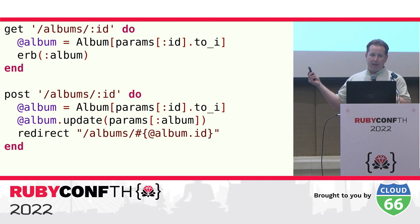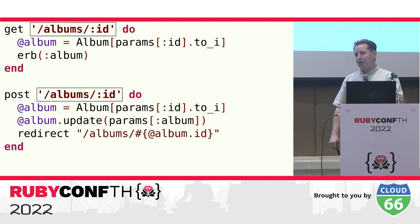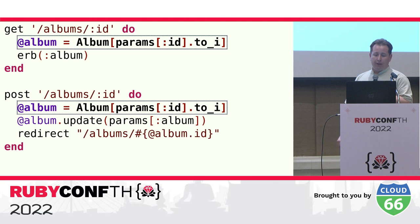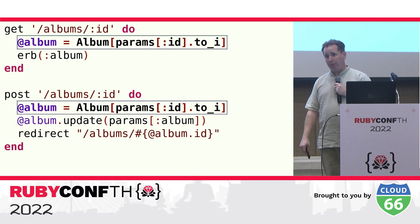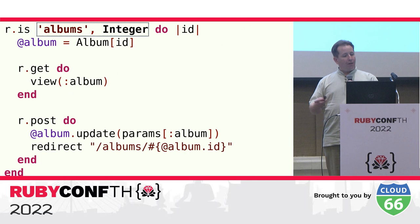Let me start with some example Sinatra code. Here we have two routes both related to a specific album — one for GET and one for POST. Sinatra's approach leads to duplication: you can see the path is duplicated in both routes, and the conversion of the parameter from a string to an integer and the retrieval of the album from the database is also duplicated. Using a routing tree, you can simplify things — instead of duplicating the path, it's specified once in the branch.